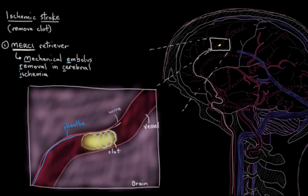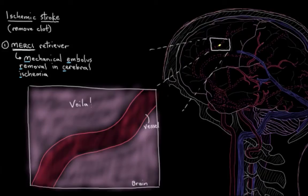It grabs onto the clot nice and tight. Then the wire and the clot are both removed together, and now blood can perfuse this area again and save the brain tissue. That's MERCY retrieval—pretty cool stuff.